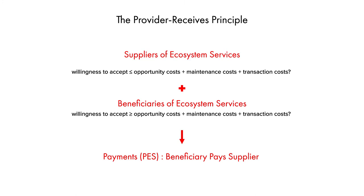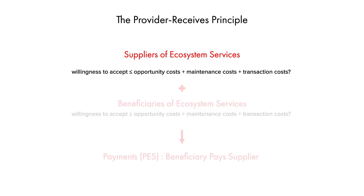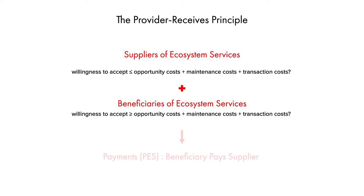This gives rise to what is called the provider receives principle, as opposed to the polluter pays principle common in command-and-control settings. The provider receives principle is an economic transaction in which the suppliers of ecosystem services — protected areas, farmers applying conservation practices — come to an agreement with the beneficiaries of those services. What ensues is a PES payment where the beneficiary pays the supplier of the service, with the hope that these services will continue in the long term.